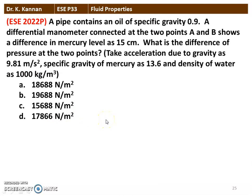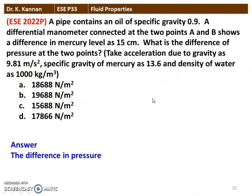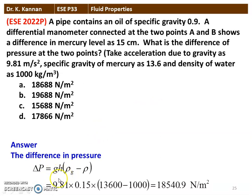The next question is from the 2022 question paper. A pipe contains oil of specific gravity 0.9. A differential manometer connected at points A and B shows a difference in mercury level of 15 cm. The difference in pressure ΔP = g × H × (ρ_mercury − ρ_oil) = 9.81 × 0.15 × (13600 − 900) = 18,540.9 N/m². The nearest correct answer is option A: 18,688 N/m².